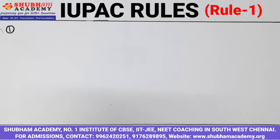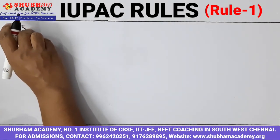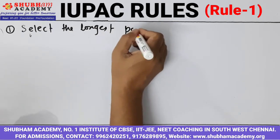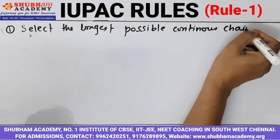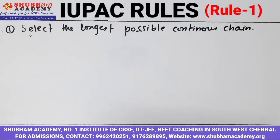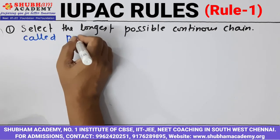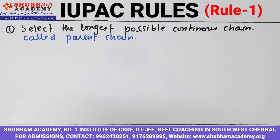The first rule says that you have to select the longest possible continuous chain. One more thing you have to keep in mind is that this longest chain can be a straight chain, it can be branched also, it can be zigzag also.